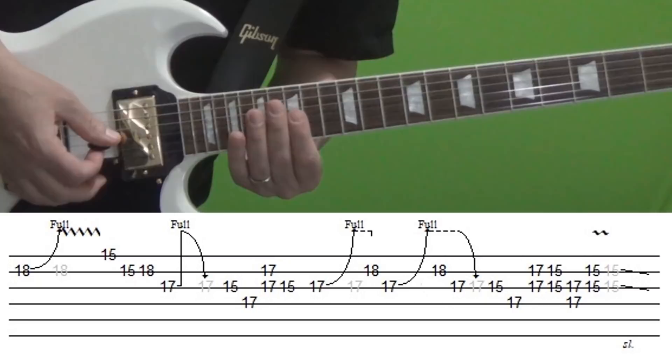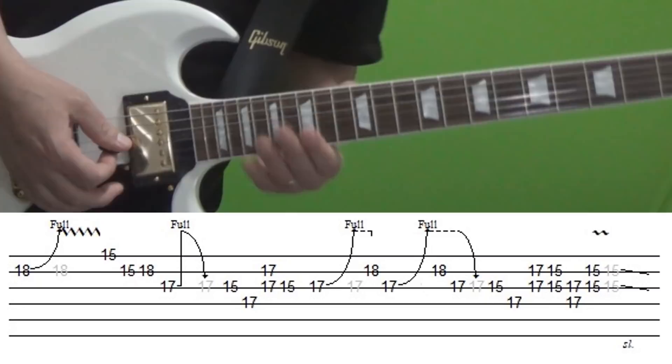And I think the one thing that people typically miss in that is adding that vibrato at the end. You're fretting the fifteenth fret of the B and the G. Give it a little shake before you go down.